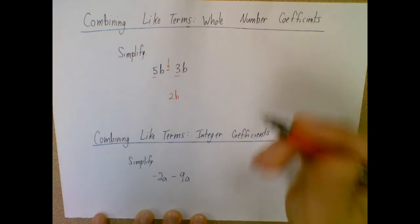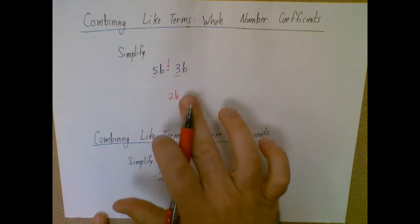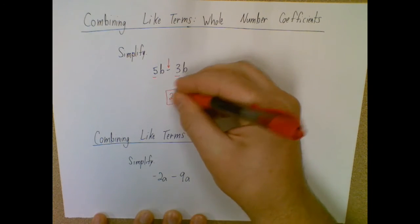And then you bring down that variable the same way it occurred. We're not going to change that at all. So 5b minus 3b will give you a single 2b. That's your answer for whole numbers.